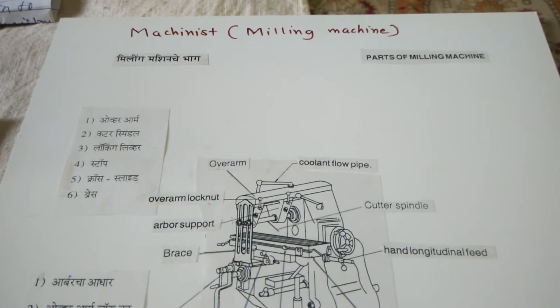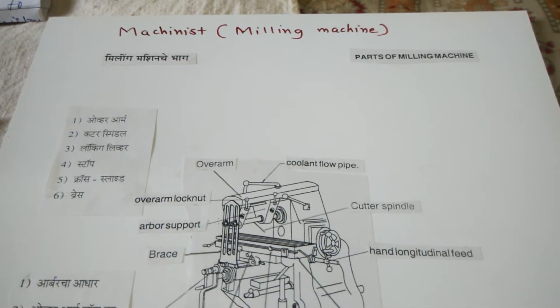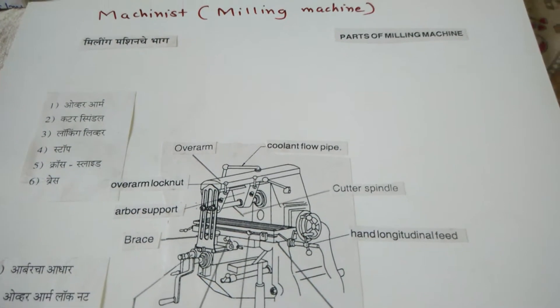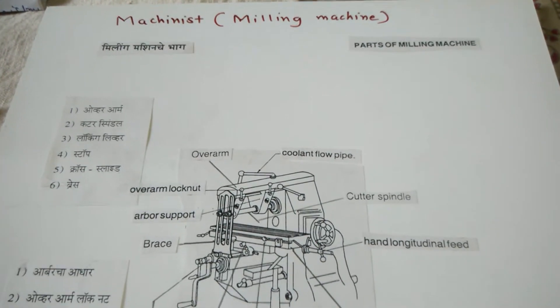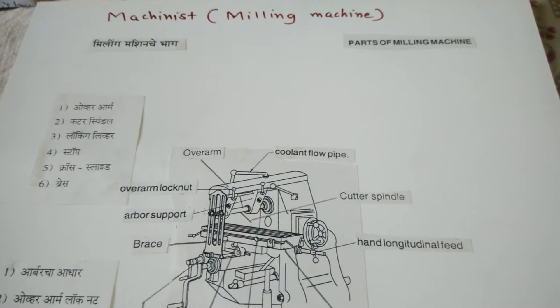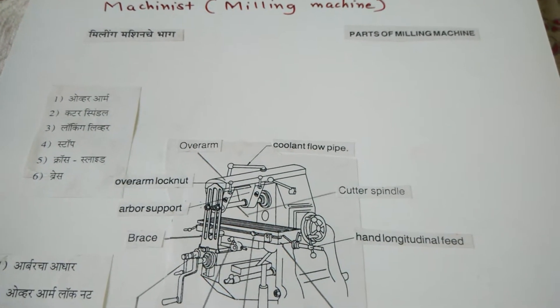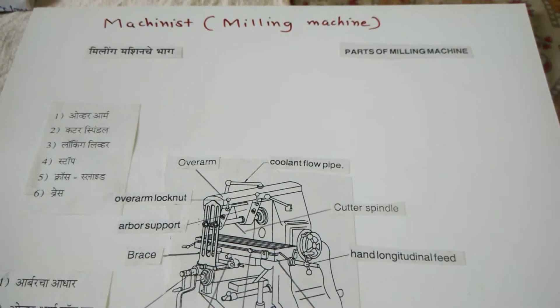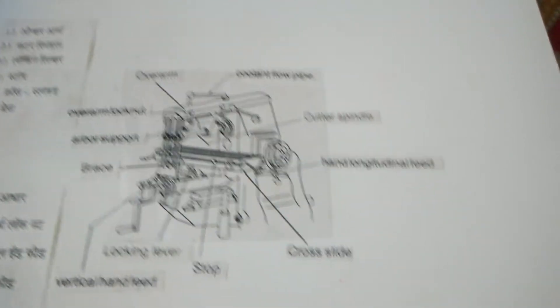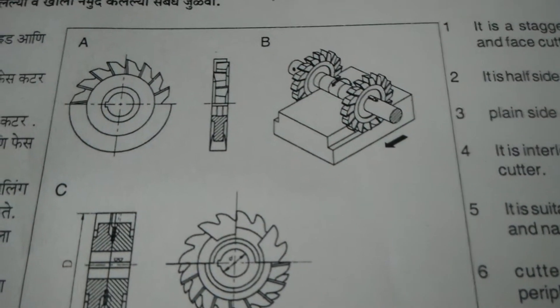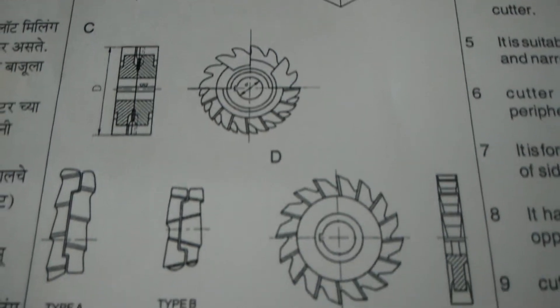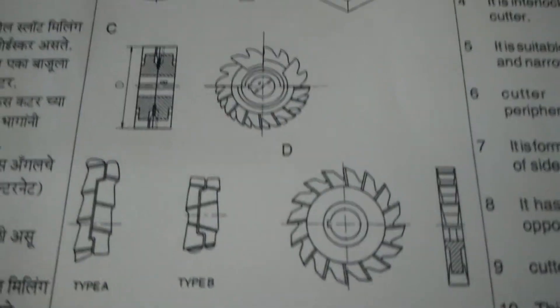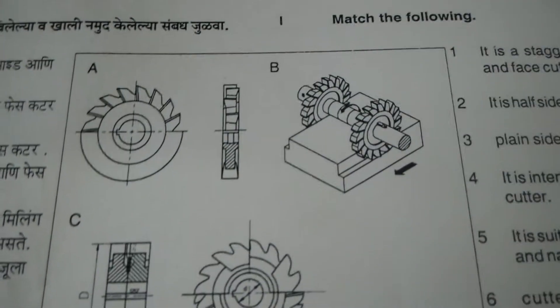Hello friends, welcome to my YouTube channel. Today I will explain the top 20 objectives on machinist trade on milling machine. This is a milling machine, and these are different types of cutters used in milling machines for various operations.